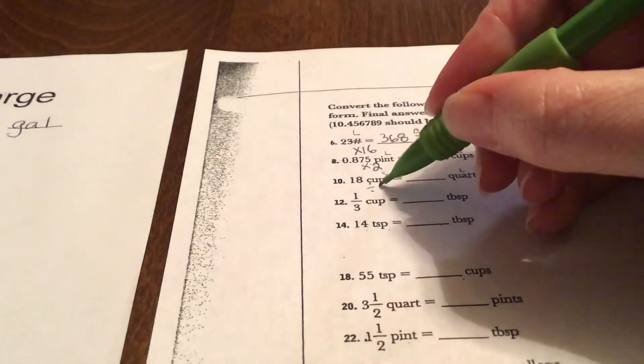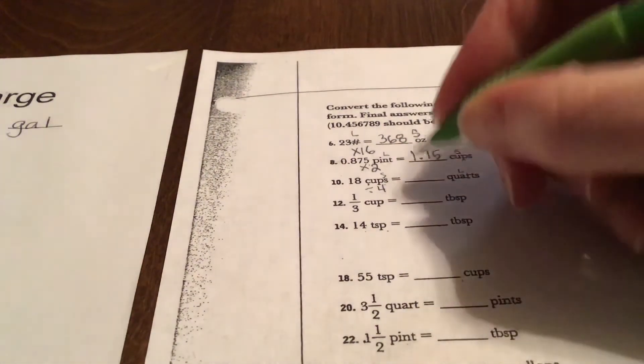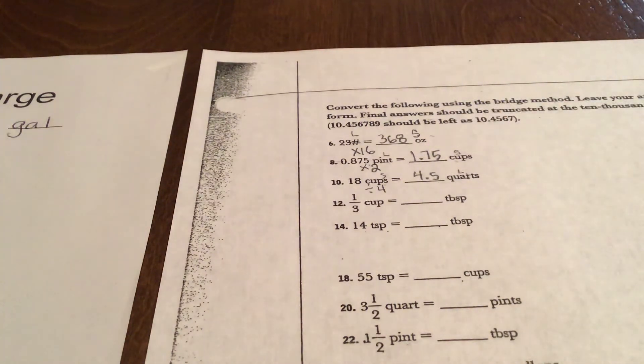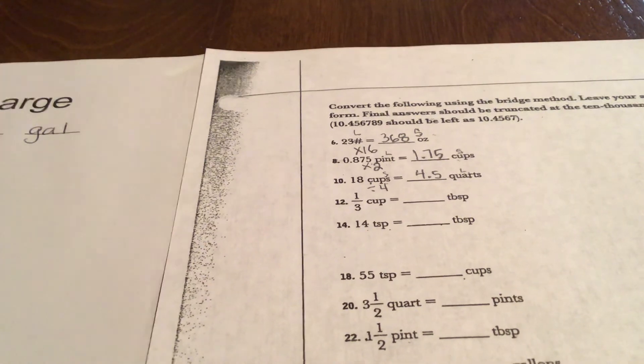So that means we are dividing by 4. So 18 divided by 4 is 4 and a half, I believe. I'll double check myself just because I could be wrong. Nope, it's four and a half. So there's four and a half quarts in 18 cups.